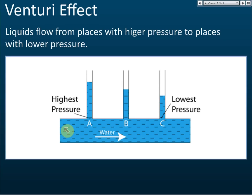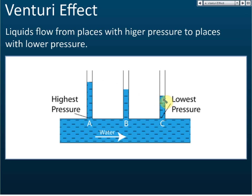The pressure decreases due to friction from the wall of the tube. If the pressure is high, it will push the water to a higher level in the smaller tubes. At B, the pressure is lower due to friction, so the water level is lower. At C, the pressure is the lowest among A, B, and C. This is the pressure behavior in a pipe without the Venturi effect.